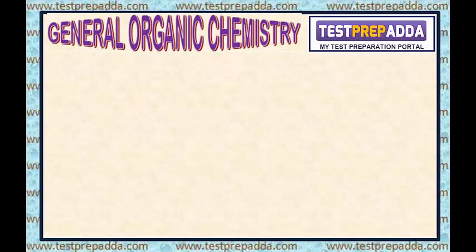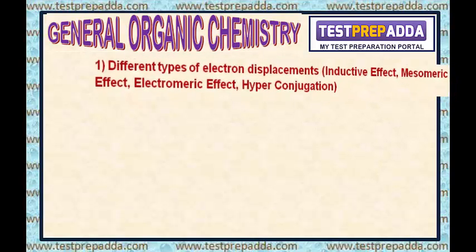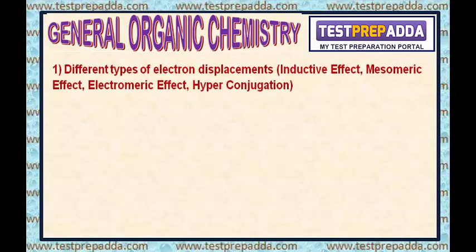In this chapter we will learn: number 1, different types of electron displacements — inductive effect, mesomeric effect, electromeric effect, and hyperconjugation.